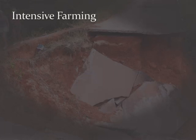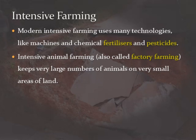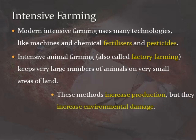The technique of intensive farming is to make best use of modern technology like machines and different chemical fertilizers and pesticides. In intensive animal farming, which we also call factory farming, we keep large numbers of animals on very small areas of land.